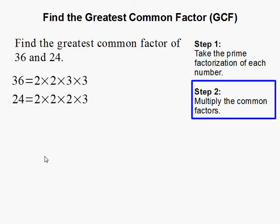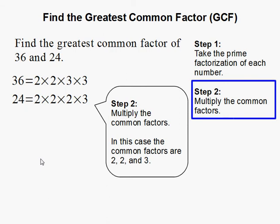Step 2, multiply the common factors. Now we must know which numbers are the common factors. So since there is a 2 right here and there's a 2 right here, that's a common factor.